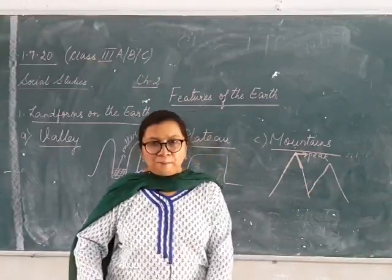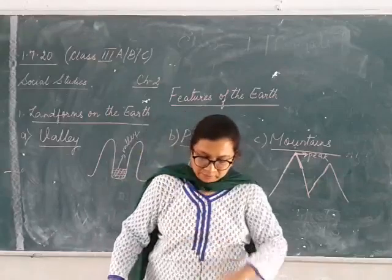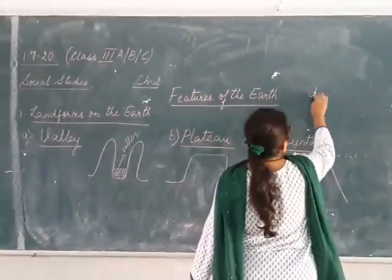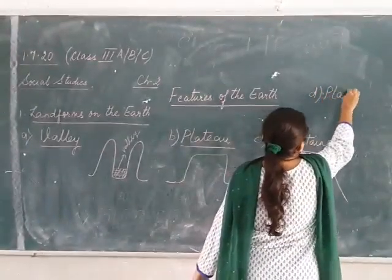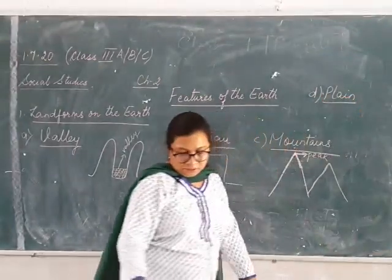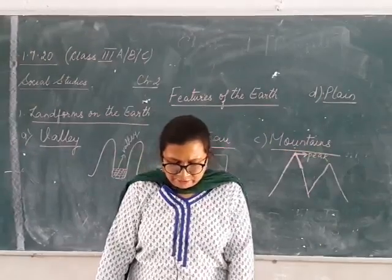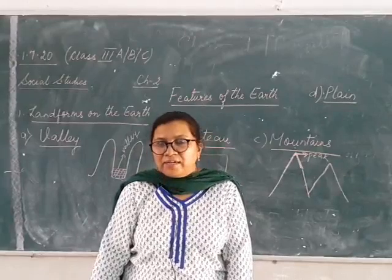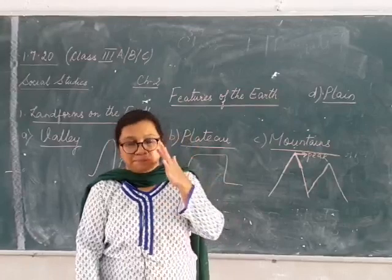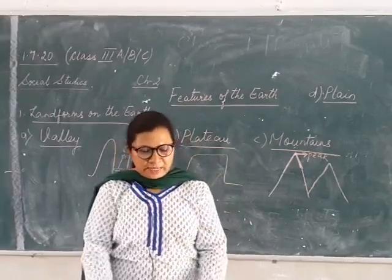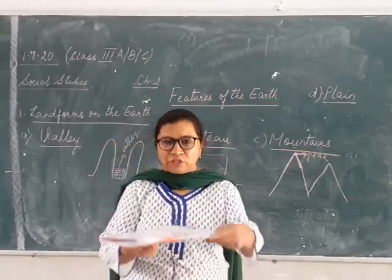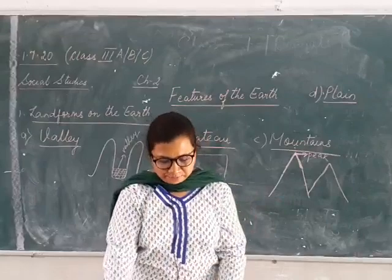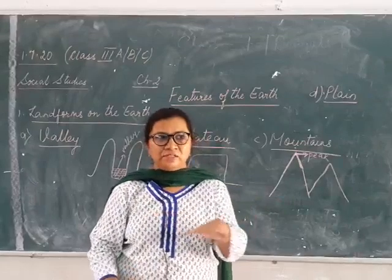Now we come to the fourth topic, that is the plain. What is a plane? A plain is a flat landmass that does not change much in elevation. Elevation means to rise up. If you see your book, it is a plain surface — it is flat. So the meaning of plain is something which is flat.